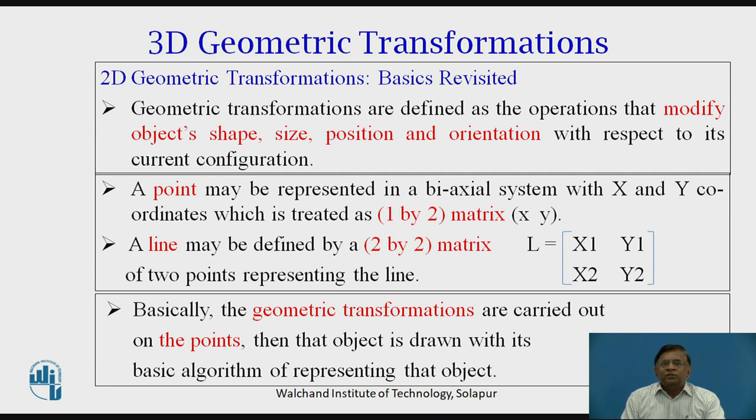Let us revise a few things as basics from 2D geometric transformations, which are covered in earlier videos. Geometric transformations are basically operations which are used to modify the given object's shape, size, position and orientation with respect to its current position or configuration.